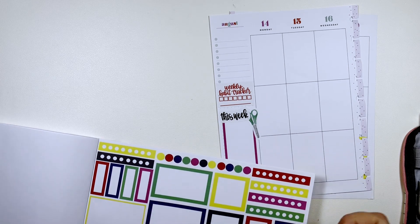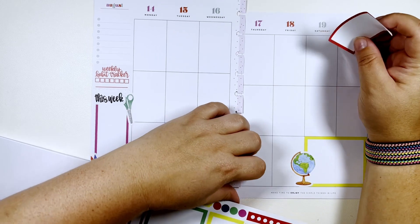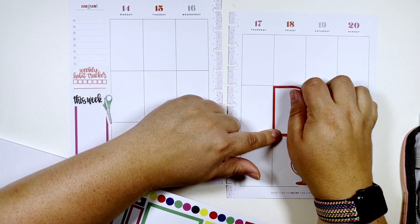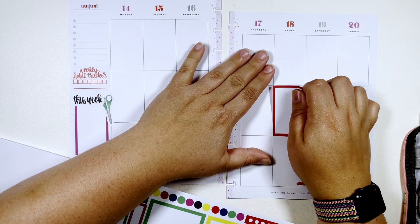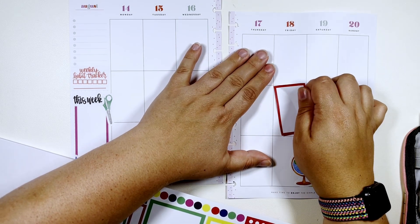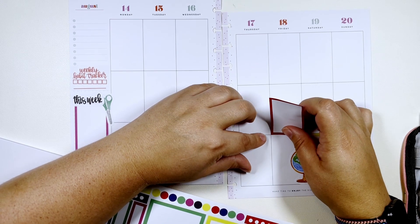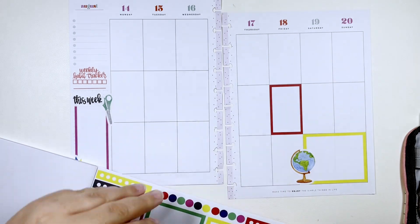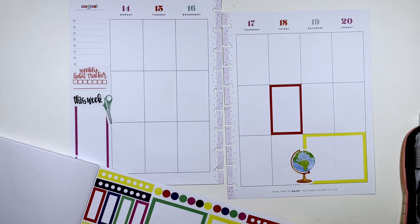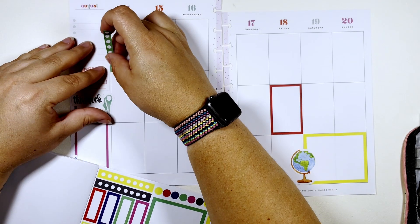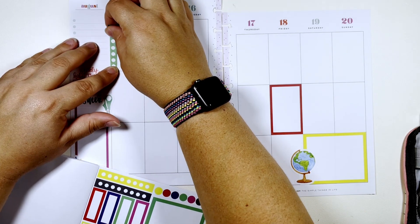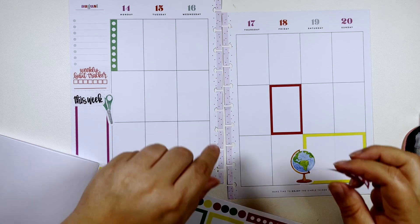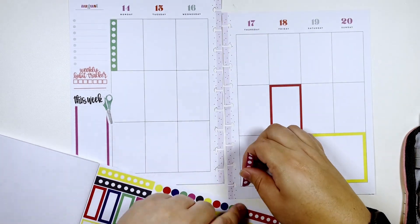Here we've got red so we'll put red on this side, put it right here on Friday. I'm gonna take a checklist, put it here on Monday and one on Thursday.